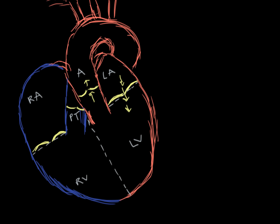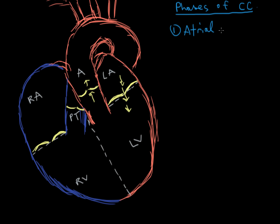Now we can start talking about the phases of the cardiac cycle. Phase one is known as atrial contraction. The atria are the two structures up top, and they're filled with blood. When they contract, they send blood through the valves on their respective sides. So the left atrium contracts and sends blood through the mitral valve into the left ventricle. That's what happens in atrial contraction — that's the first phase.